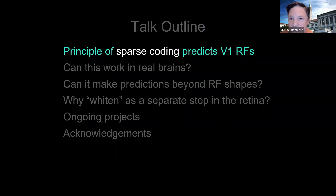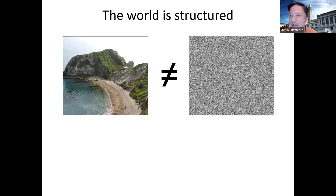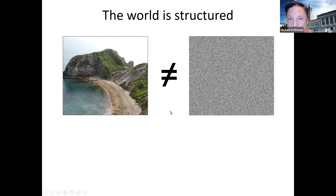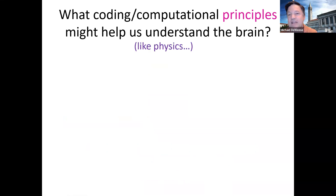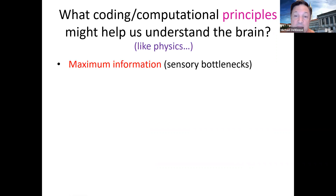So, the principle of sparse coding. The real world is structured. You look out your window and there are mountains and whatever — you don't see unstructured stuff. Mathematically, how do we describe that structure and why do we care? The fact that visual input and other types of natural sensory input is so structured means our brain may have evolved to do a good job of efficiently encoding it.